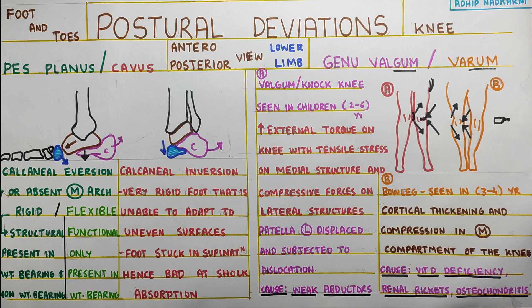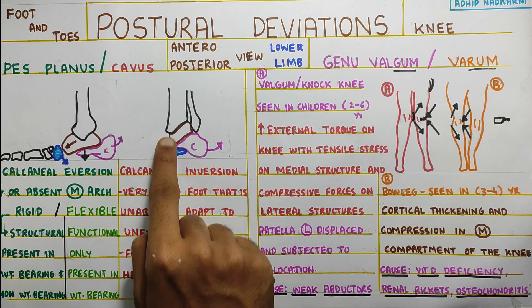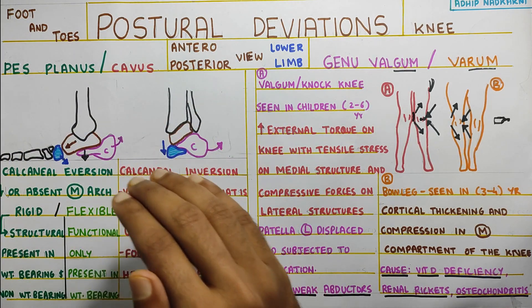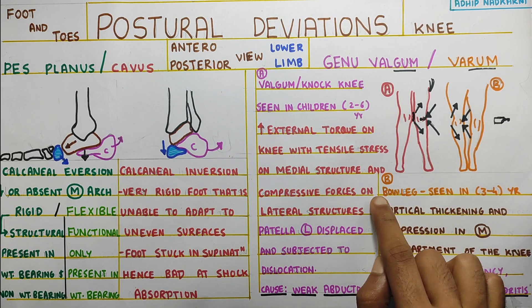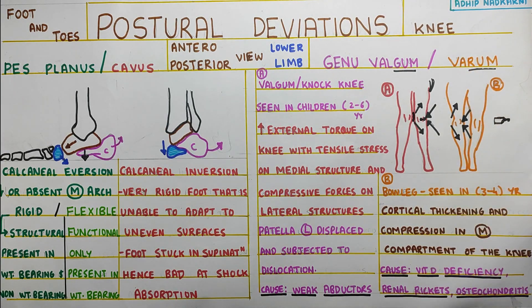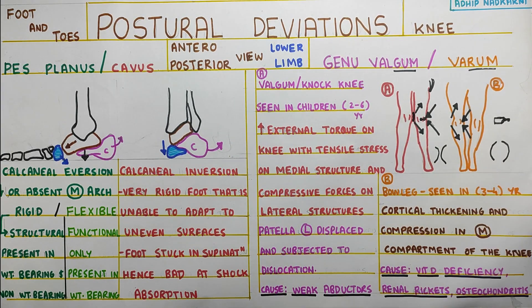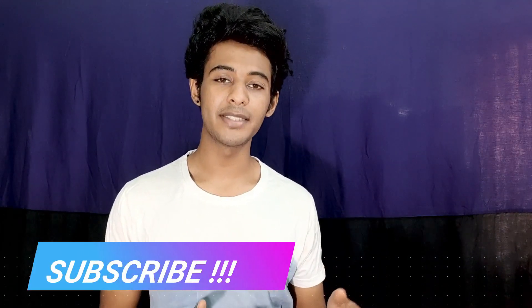To summarize: calcaneal eversion drops the navicular and causes flat foot; calcaneal inversion raises the navicular, makes the foot very rigid, and causes pes cavus or high arch foot. Then we saw genu valgum — knock knees — and genu varum — bow legs — where the leg goes outward like a bow. Thank you for watching. If you liked the video, share it with your friends, hit subscribe, like the video, and let me know in the comments what other topics you'd like me to cover.